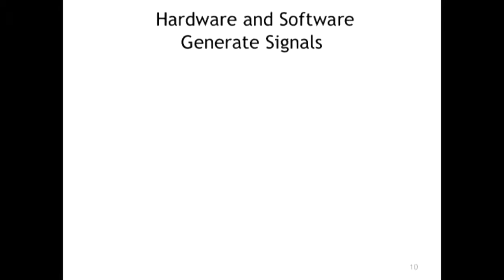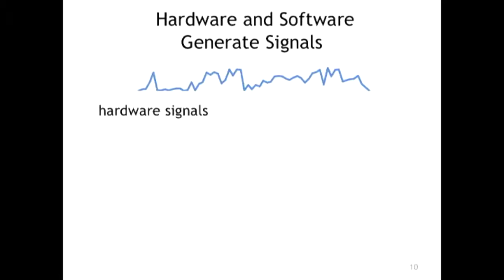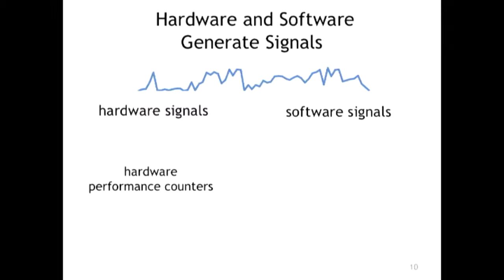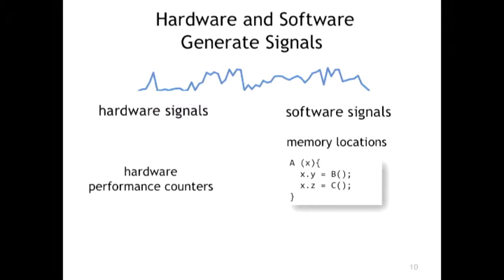All systems — software and hardware — while working, generate interesting signals. Hardware signals come from performance counters telling you how many instructions per cycle were done, or how many memory transactions occurred. Software also generates signals: software mutates state, so if you have functions A calling B calling C, the software generates a signal where Y is which method you're in over time — those are software signals.